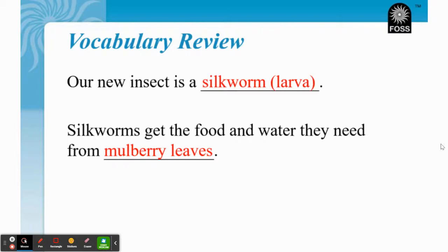We ensure that they have space to grow, which is why they are in a very large jar, and they need air. So thinking about the four things that a silkworm needs to survive: a silkworm needs air, space to grow, food, and water. And food and water both come from the mulberry leaves.